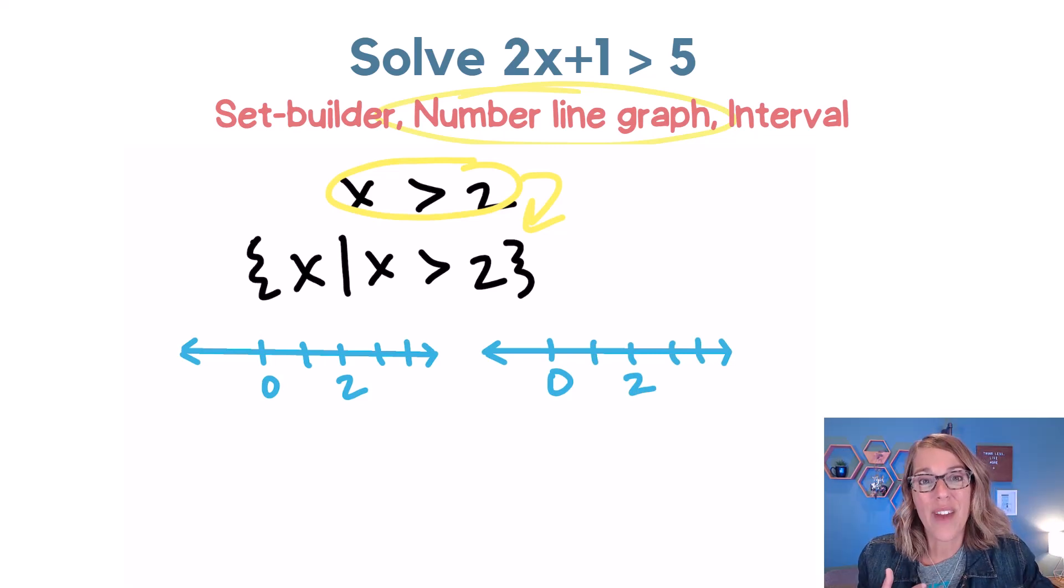Same thing. So I want a graph of all of these solutions. Now the solutions don't include 2. It's got to be a little bit greater than 2. So I'm going to use an open circle so that I'm not including 2, but I'm going to use an arrow pointing to everything bigger.